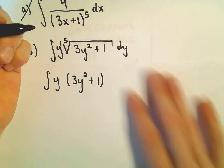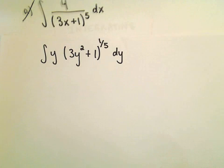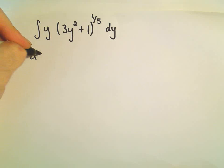So again, this is a fifth root. I'm just going to write that as the one-fifth power. When I'm doing derivatives or anti-derivatives, I like to see the exponent. But now we're going to pick our u. So again, it's kind of start simple. So I'm going to pick it to be 3y squared plus 1, just the stuff in the parentheses.